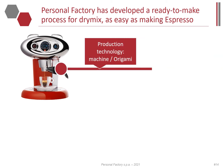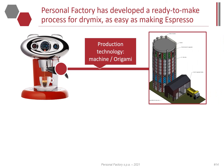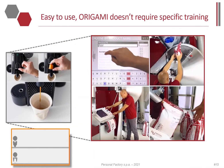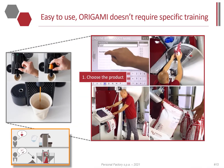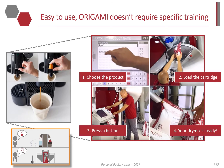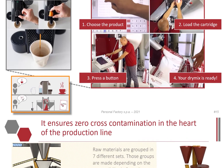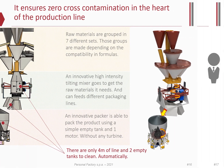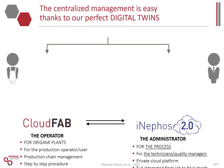Only two things are required: a fixed asset — the plant — and a consumable — the chemical cartridge. A production plant that doesn't require any specific training. Only four steps: choose the product, load the cartridge, press the button, and enjoy your dry mix. The process ensures zero cross-contamination because it is entirely designed around that specification, with independent workflow for each raw material, an innovative mixer and packaging machine.